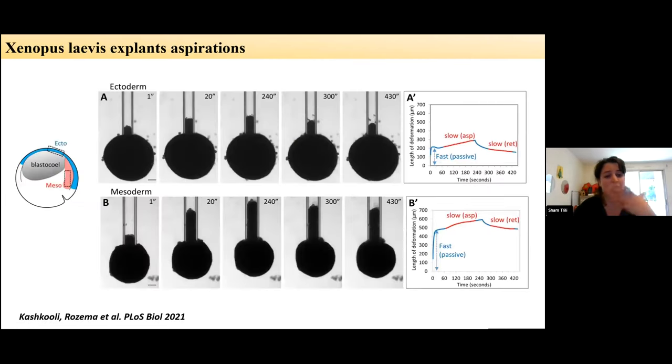And now this technique has been applied more to developmental relevant things. So here it's a nice recent paper from François Fagotto lab, where they take explants from Xenopus larvae at the ectoderm or mesoderm tissues, and they can really nicely measure the differences in viscoelastic properties of the tissues. So here you can see that you have a rapid phase that is more due to the viscoelastic response of cells, and then the more slower phase that is tissue viscosity.